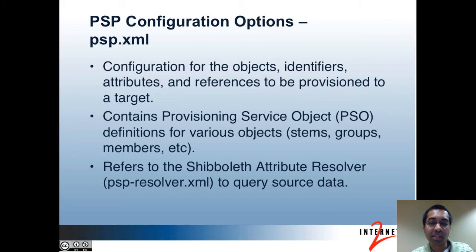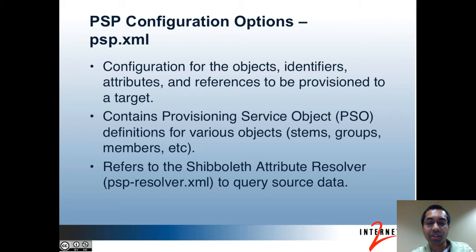Next, there's the PSP.xml file. This contains the configuration for objects, identifiers, attributes, and references to be provisioned to a target. It contains provisioning service object definitions for objects like groups, folders, and members, and it references the Shibboleth attribute resolver configuration to get source data. For instance, if you want to provision a new attribute for group objects, you would modify the PSO definition for groups and likely reference the attribute resolver to get the data from Grouper. If your provisioning structure is flat and you don't want stems represented as OUs in LDAP, you may want to remove the PSO definition for folders in this configuration file.